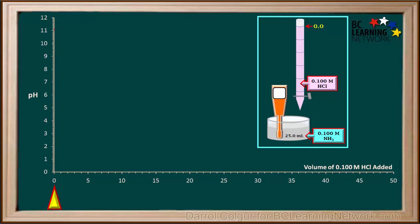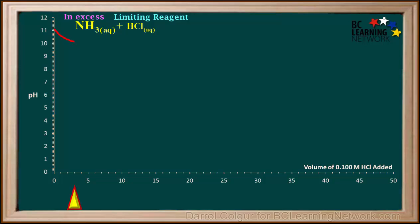As the first 3 ml of HCl is added, the pH goes down fairly quickly. From 3 ml to 24 ml of HCl added, the NH3 is in excess and the HCl is the limiting reagent. The limiting reagent, HCl, will react with some of the excess NH3 to form some NH4+ and Cl-.